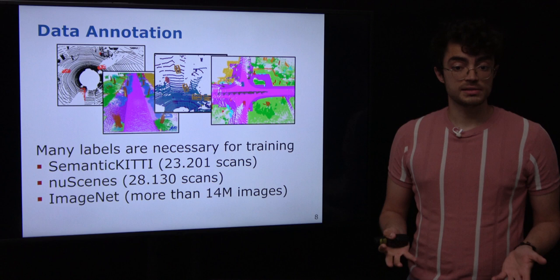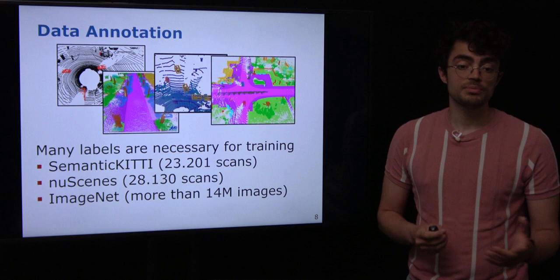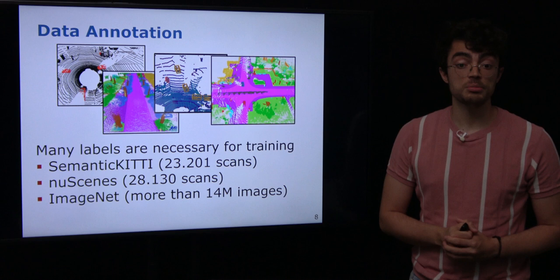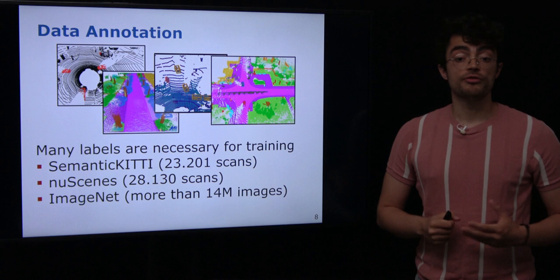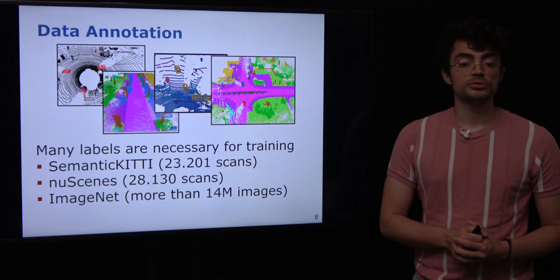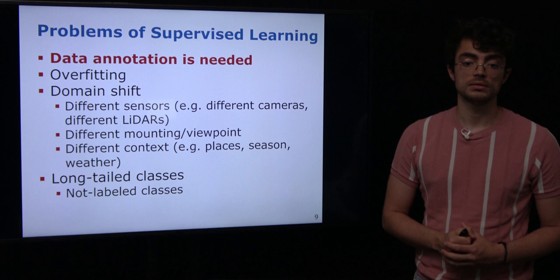For supervised learning methods, a lot of data is necessary for training to have a reliable model to deploy in the real world. For example, Semantic KITTI has around 23,000 labeled scans and the nuScenes dataset has 28,000 labeled scans — which are not comparable to image domain datasets. ImageNet has more than 14 million labeled images, so there is a clear gap in the amount of labeled data between LiDAR and image data domains.